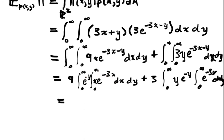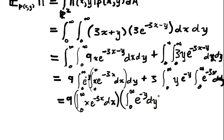Now I notice that this integral here is just a constant, so I can draw it out. That means I've got integral xe^(-3x) dx times integral e^(-y) dy. And similarly, 3 times integral e^(-3x) dx times integral ye^(-y) dy.